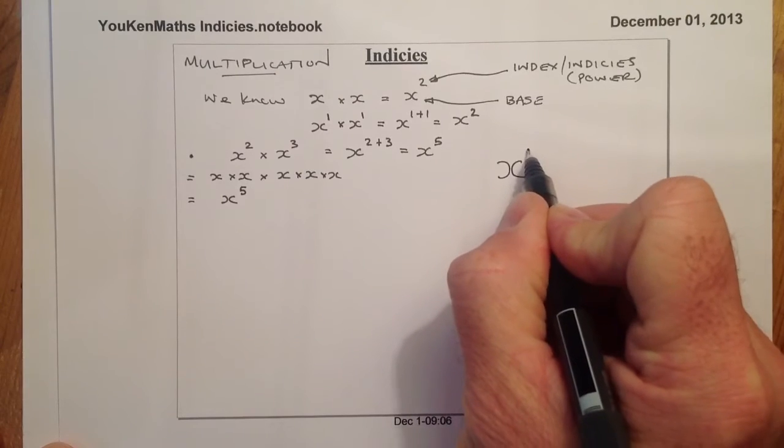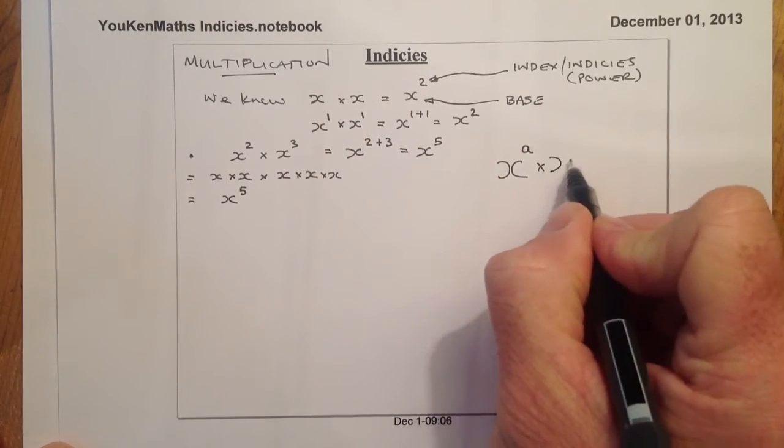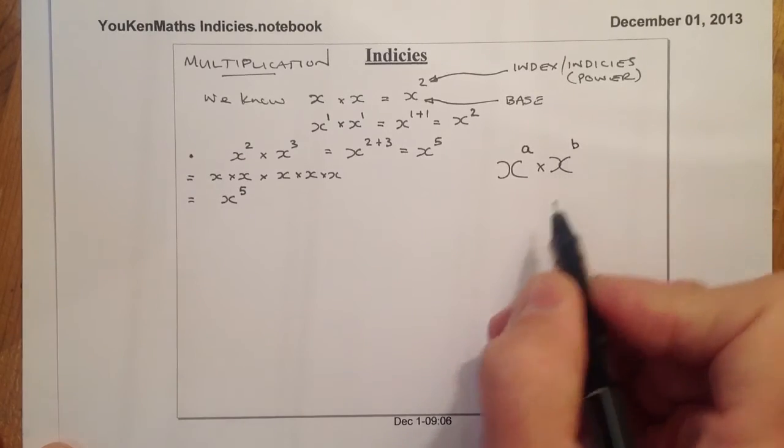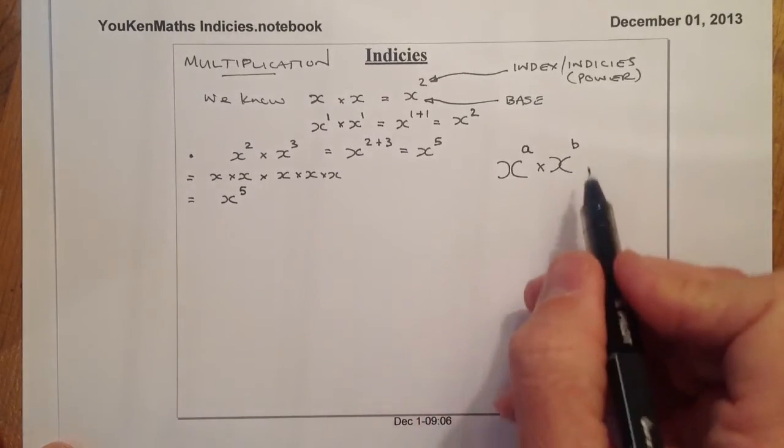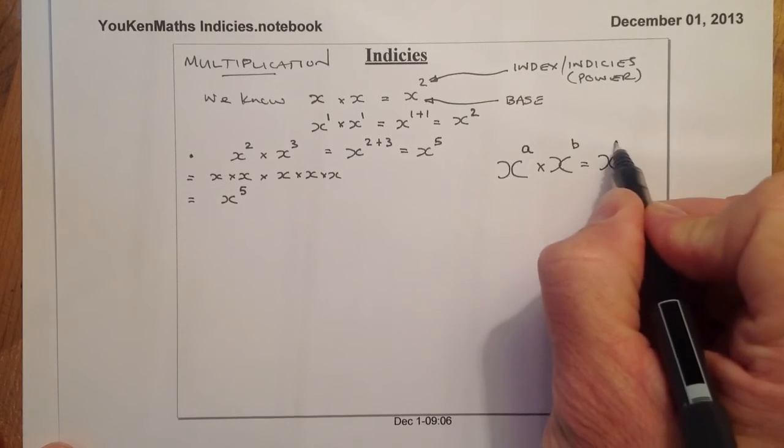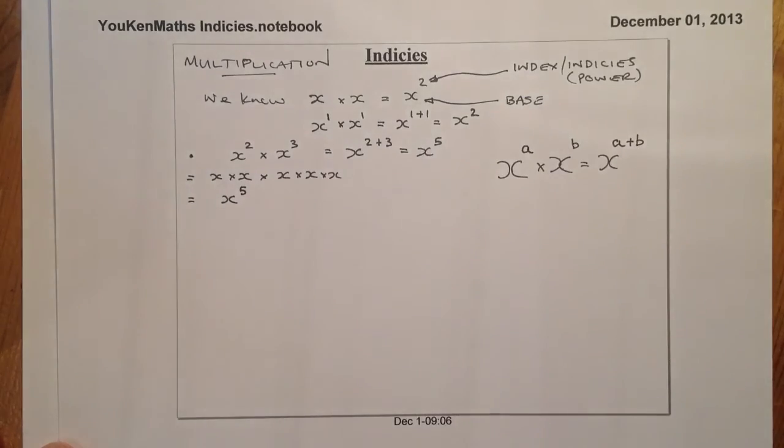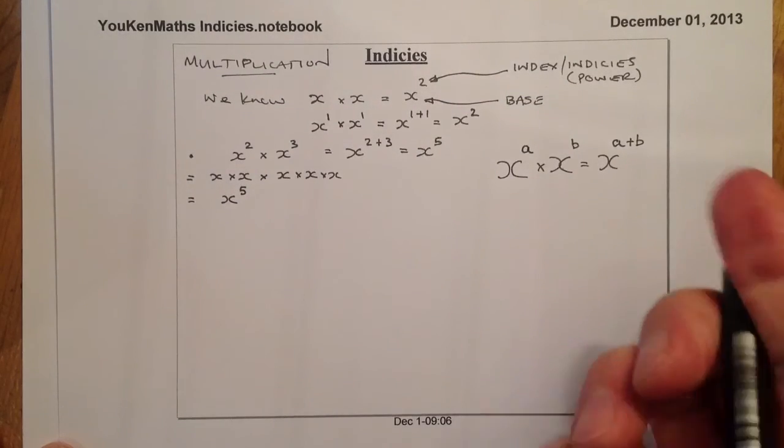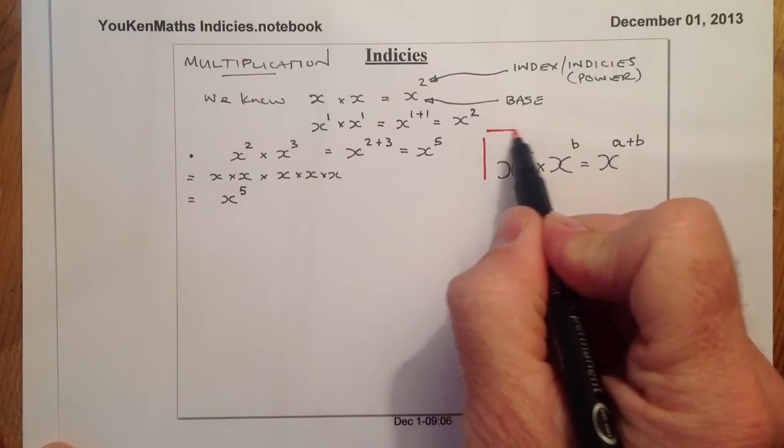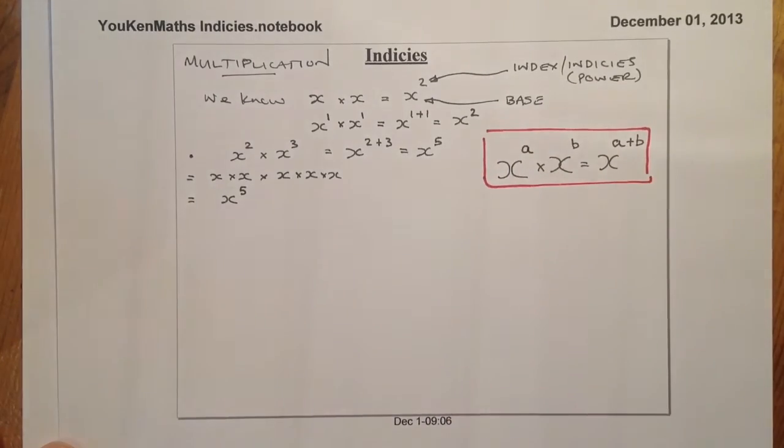What we have is if I've got x to the power of any number, and I'm going to multiply it by x to the power of another number, the bases are the same. So what I can say is that will be equal to x to the power of a plus b, whatever the values would be in there. So that will be one of the laws that we're going to consider when we're using indices and multiplication.